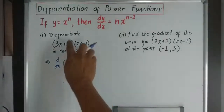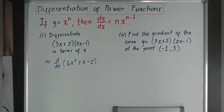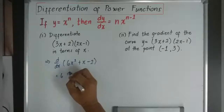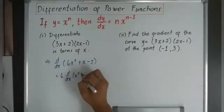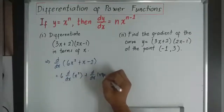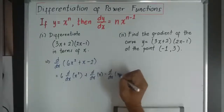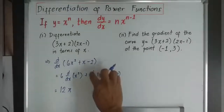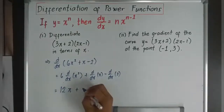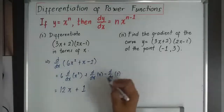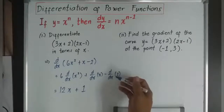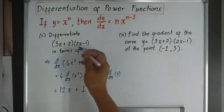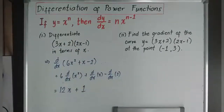So the expanded expression gives us d over dx of 6x squared plus x minus 2. This becomes 6 times d over dx of x squared, plus d over dx of x, minus d over dx of 2. That gives 2 times 6 equals 12, so 12x, plus 1 times x to the power of 0 which is 1, and the derivative of the constant 2 is 0. So differentiating gives 12x plus 1.